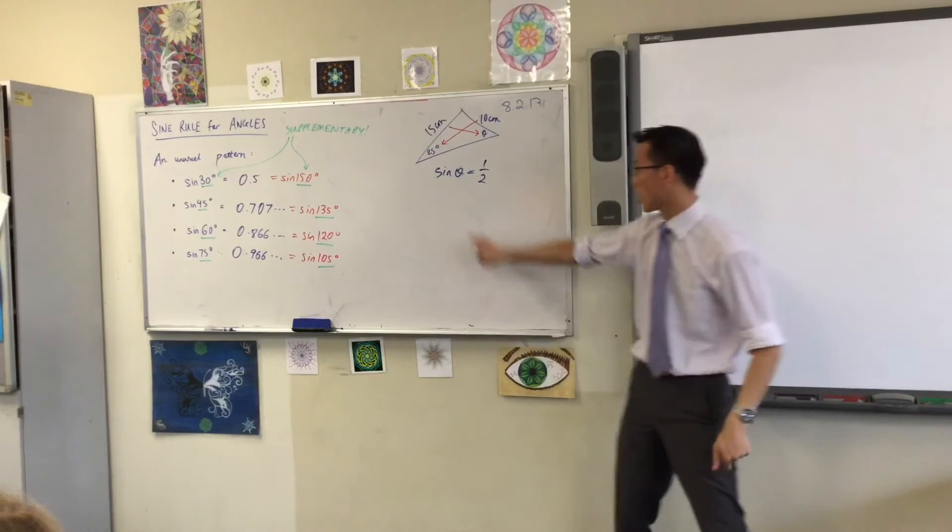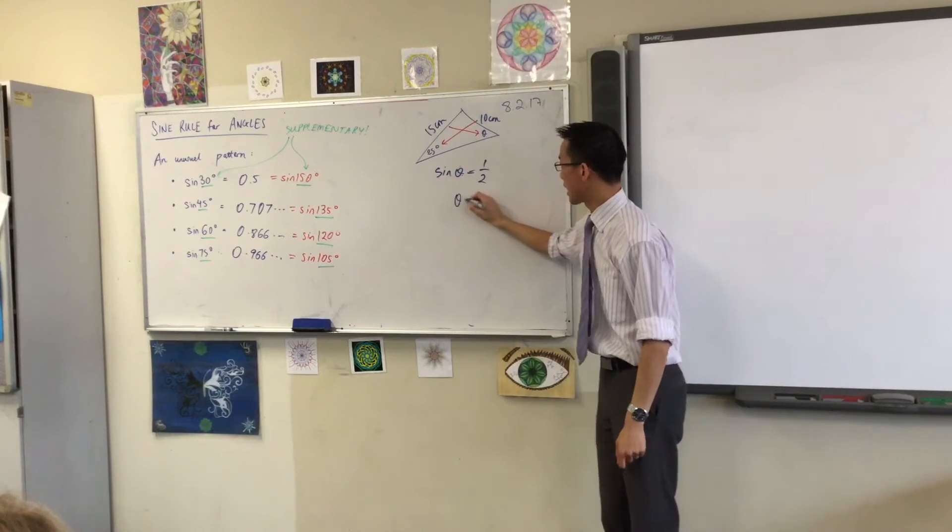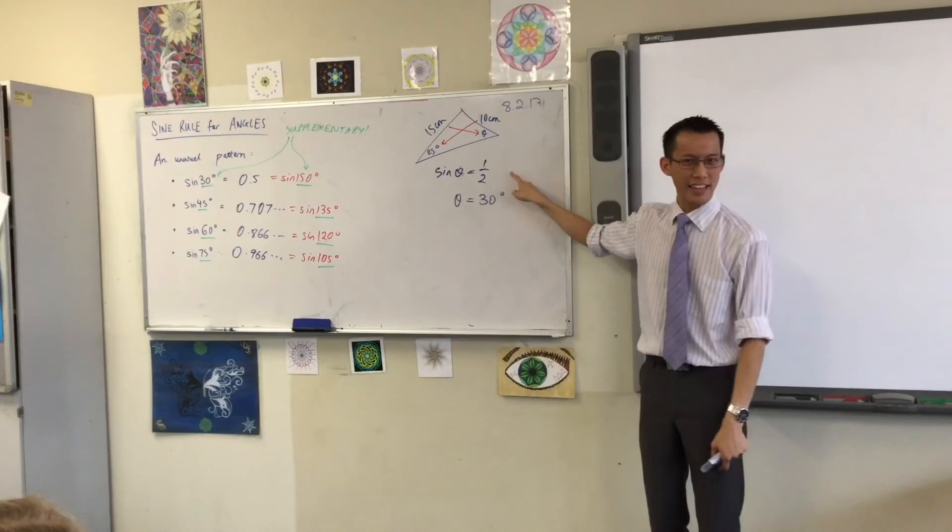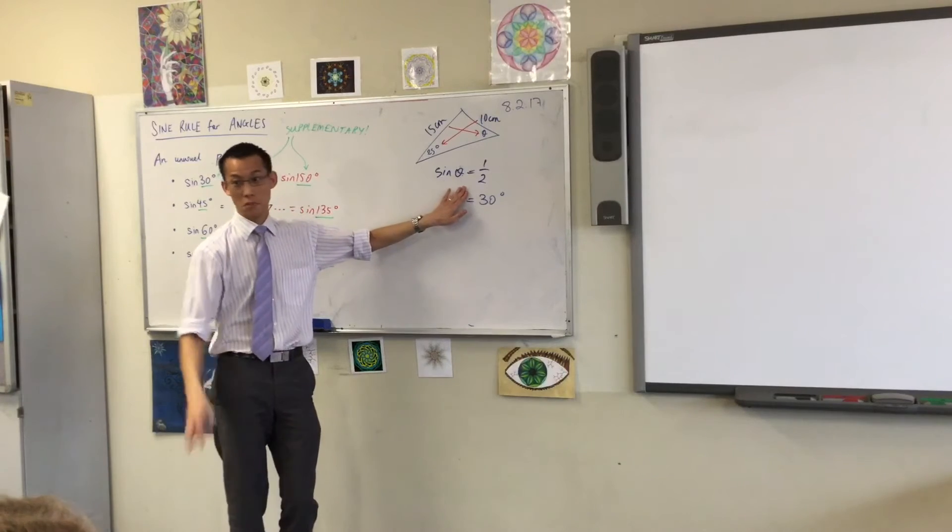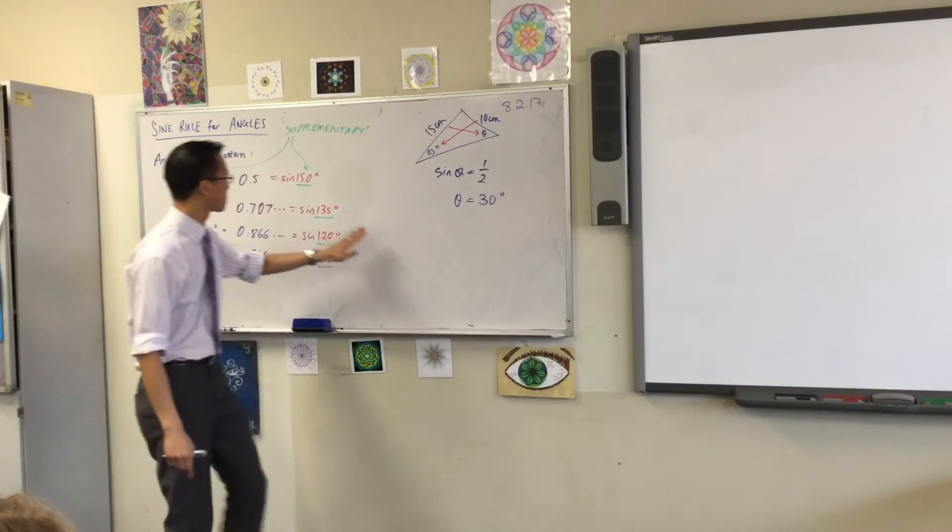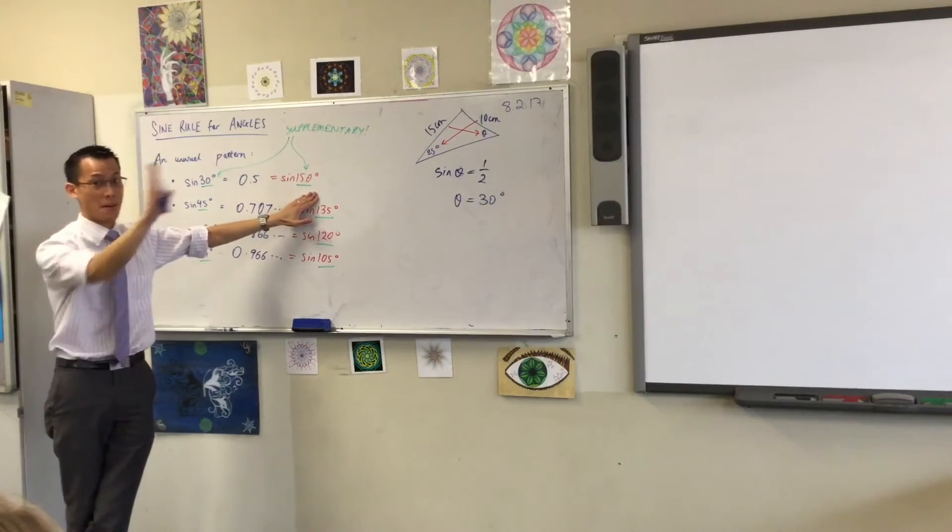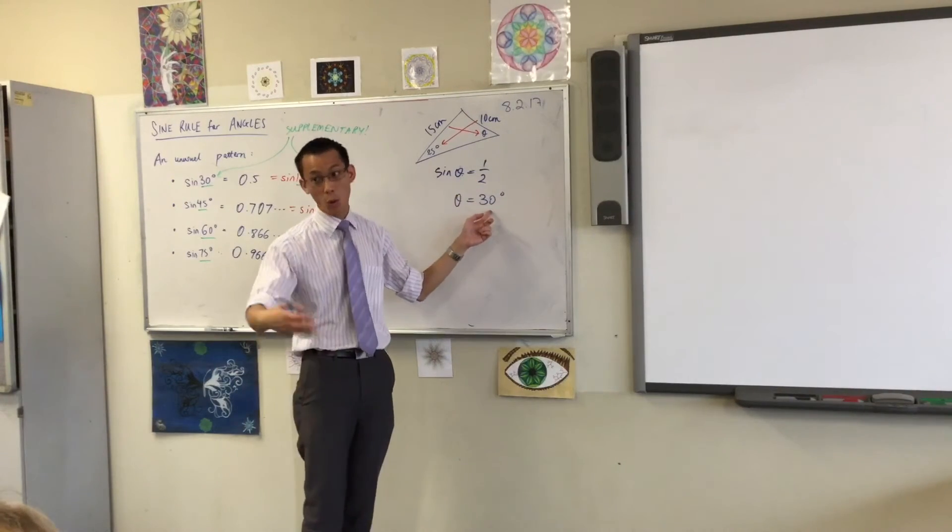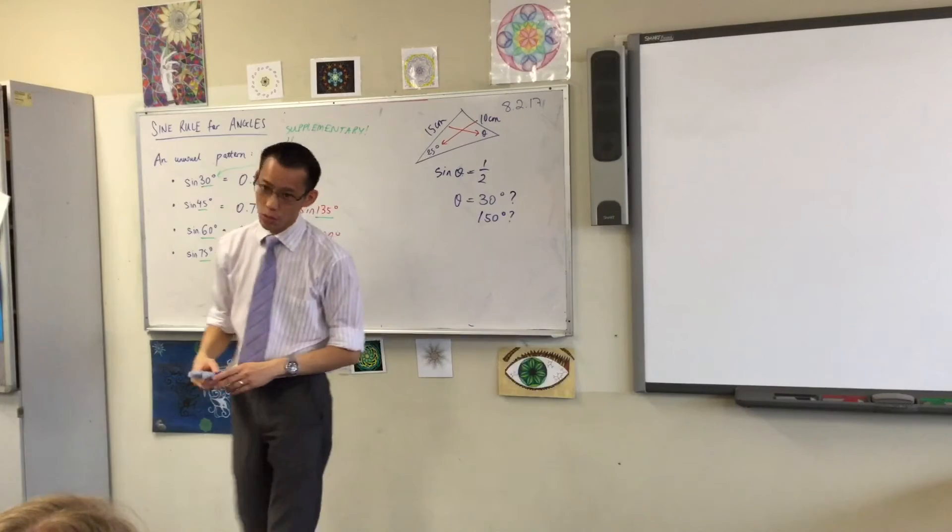I'm going to press shift sine because I want to undo this, right? And your calculator will faithfully tell you, according to the left-hand side we just did, yeah, theta's 30 degrees. But here's the thing. What you're telling your calculator to do is, hey, there's some angle—I don't know what it is—but when I do sine of that angle, apparently the answer is a half. Can you tell me what the angle is? And it gives you a solution. However, it's not the only solution.